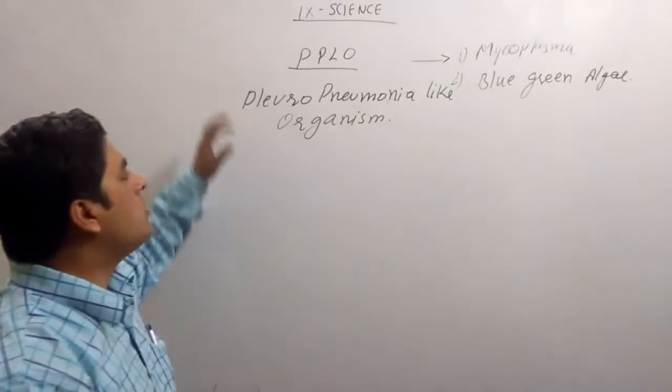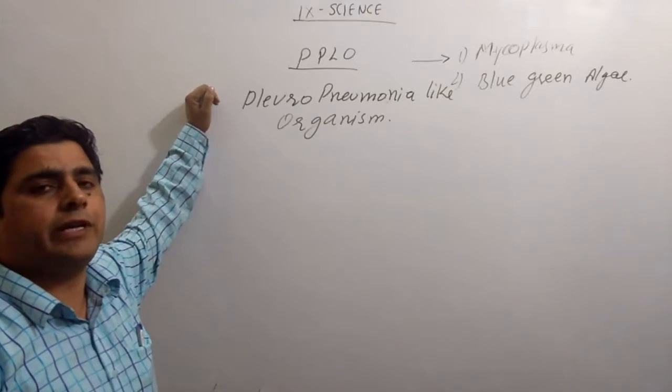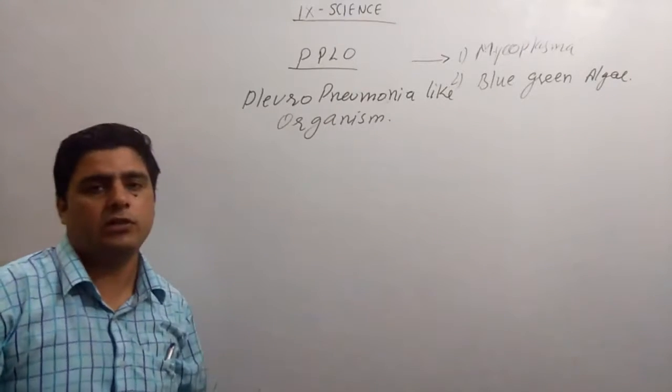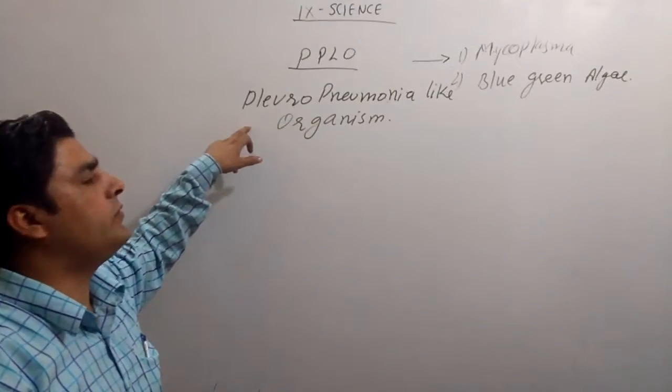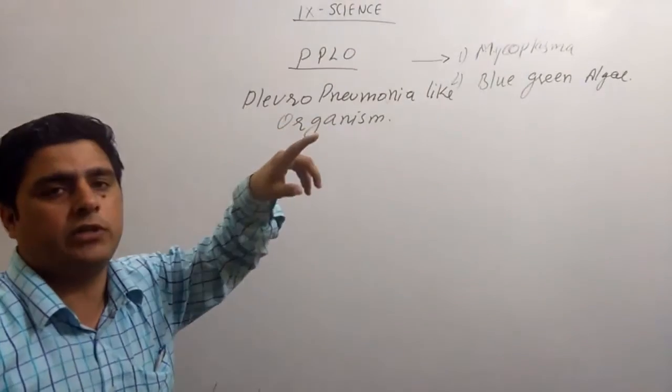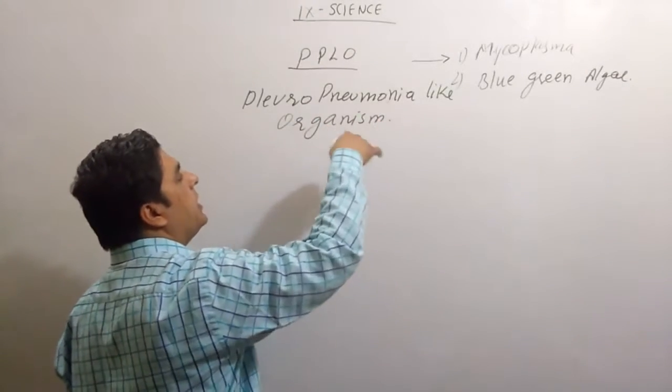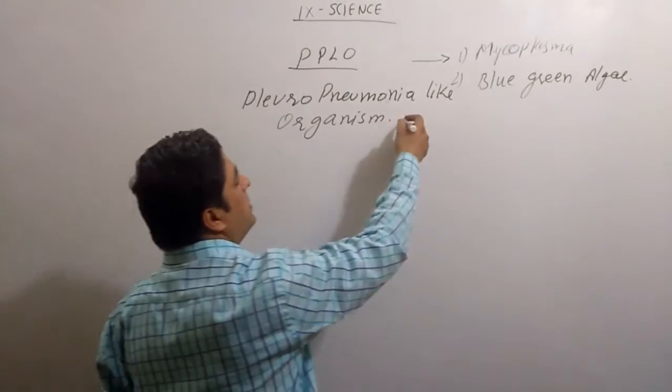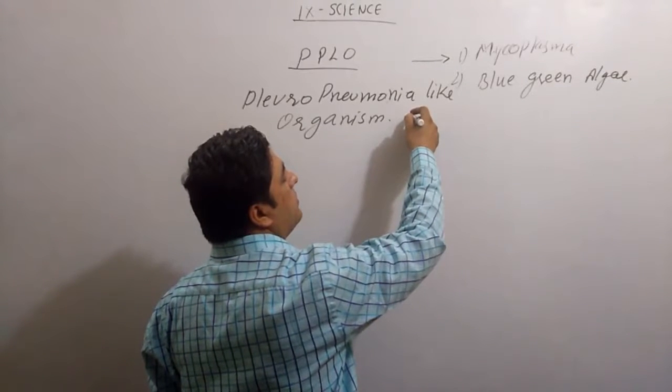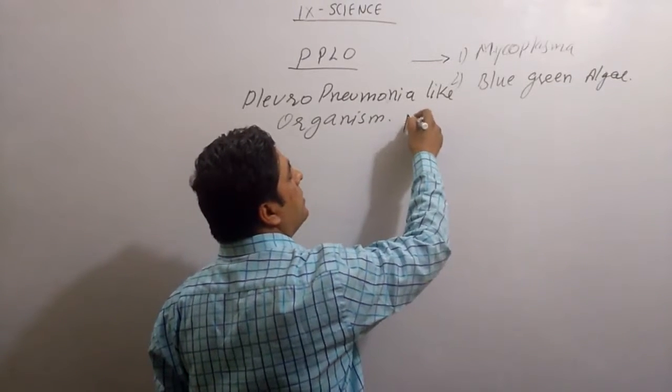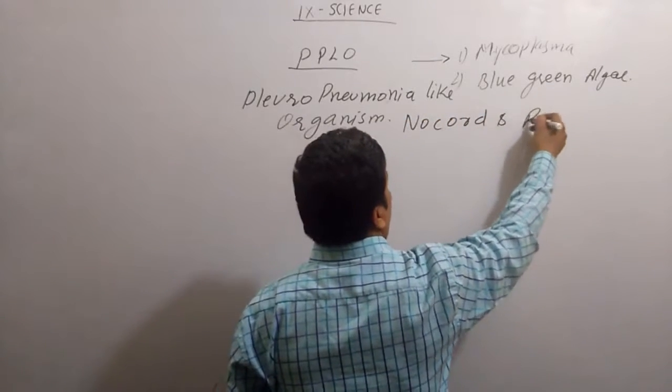When scientists Knockard and Roux were working on cattle's pneumonia, they found this kind of organism in their fluid. That's why it is known as Pneumonia-like organism. They were discovered by Knockard and Roux.